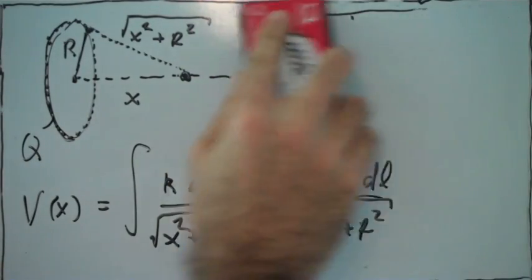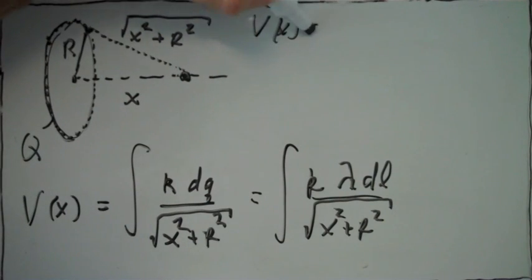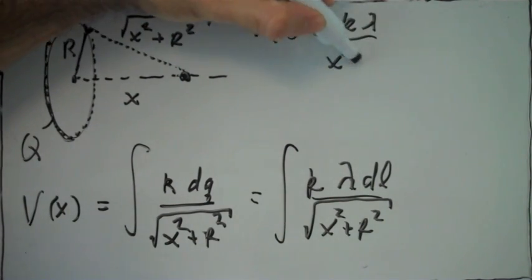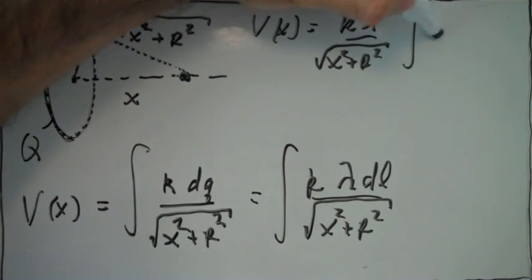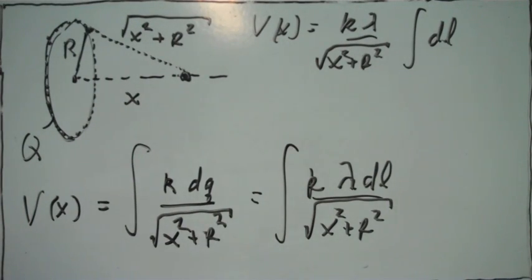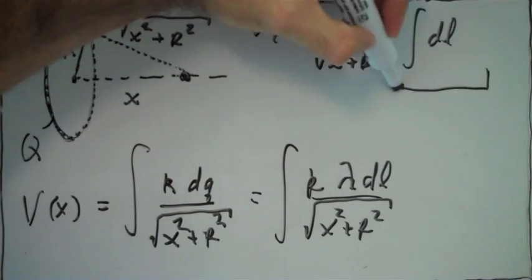dl is the length of that little point of charge along the ring, so we can bring out the constants from the integral and we just have the integral of dl, which is the circumference of the ring.